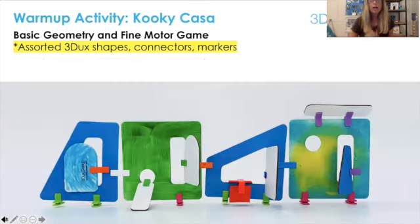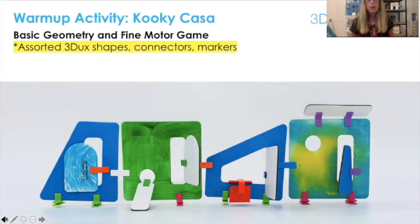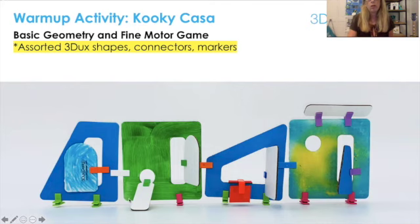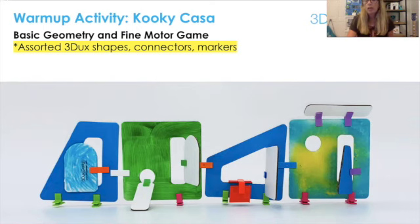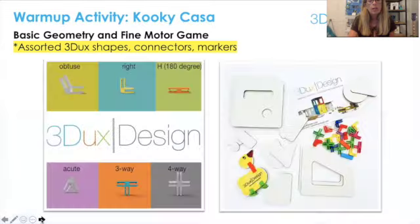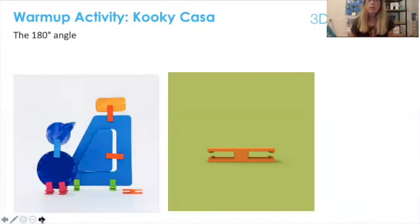Once your students are done figuring out which angles work for the door, you're going to help them solidify their understanding of the different angles by asking them to add an adaptation to a house using the different angled connectors. In this example, the green square on the left uses an acute angle to create a ramp for wheelchair access. The blue trapezoid uses right angles to create stairs. The multicolor square on the right uses obtuse angles to create an awning for shade, and they made a street or building sign with their 180-degree angle.